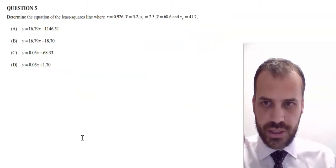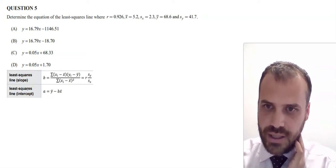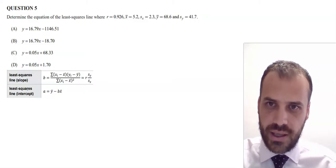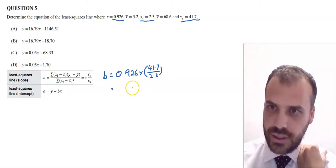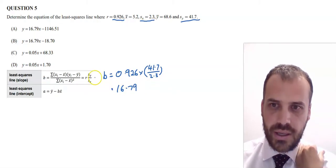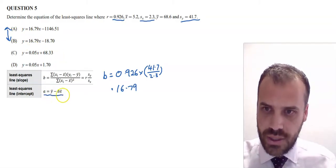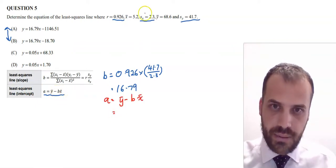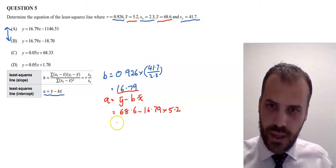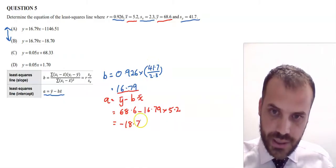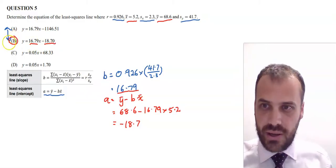Question five: reach for your formula sheet — we're looking at a least squares line. To find the gradient, we use r × Sy / Sx. Plugging in our R value, Sy, and Sx, we get 16.79 — that's our B value, our gradient. So the answer is A or B. For the intercept, we use Y-bar minus B times X-bar: with Y-bar of 68.6, X-bar of 5.2, and B of 16.79, we get negative 18.7. Final answer: B value 16.79, A value negative 18.7. Answer is B.